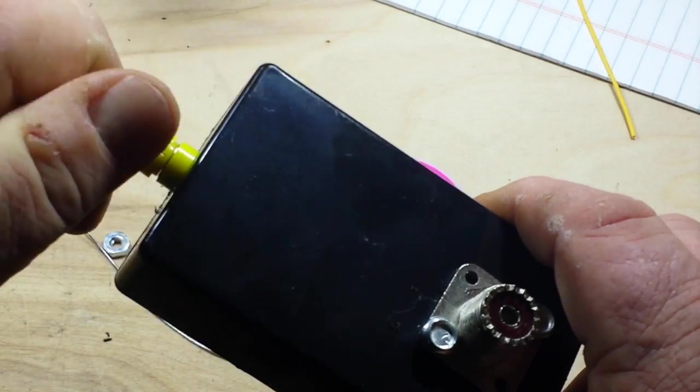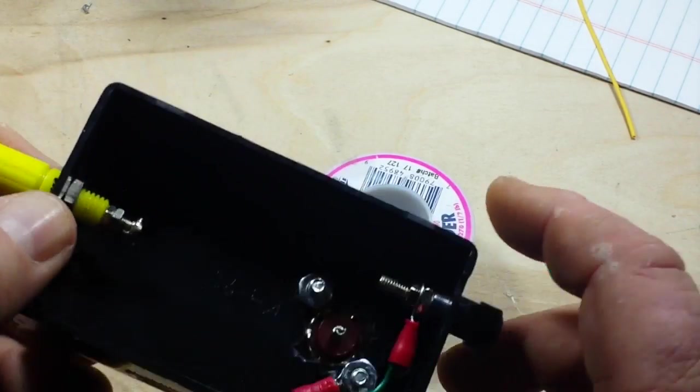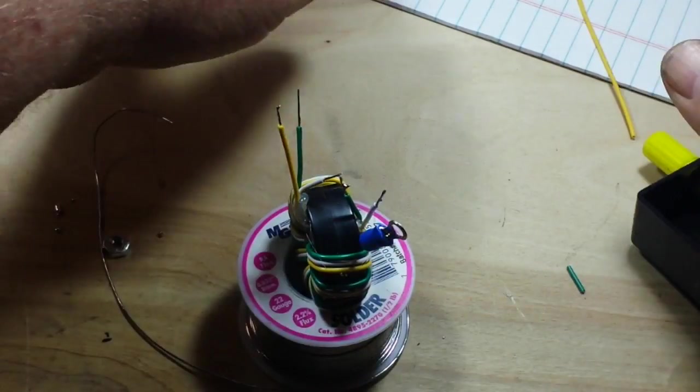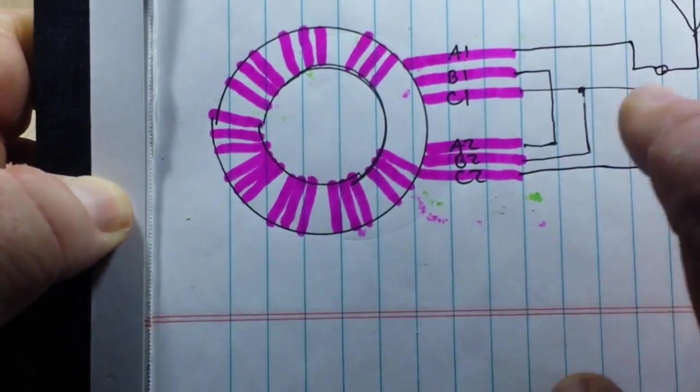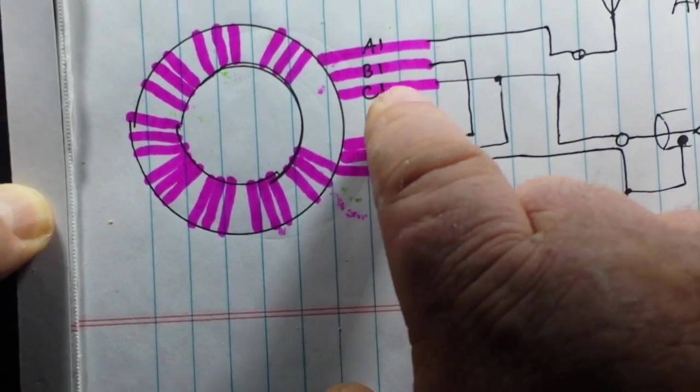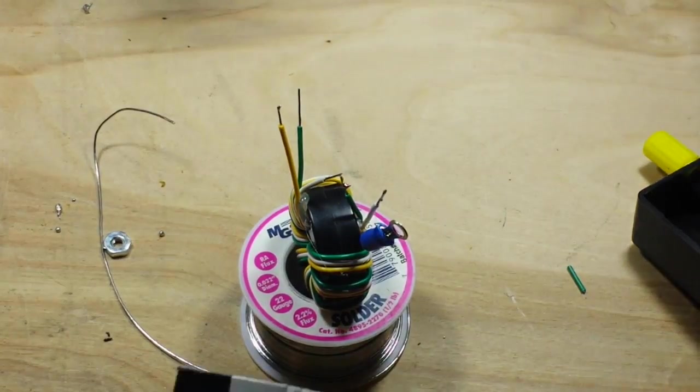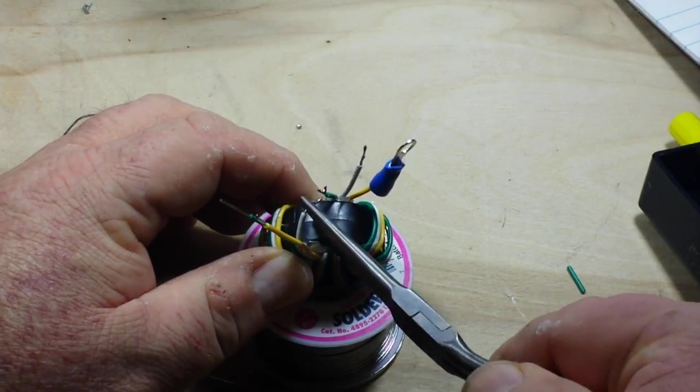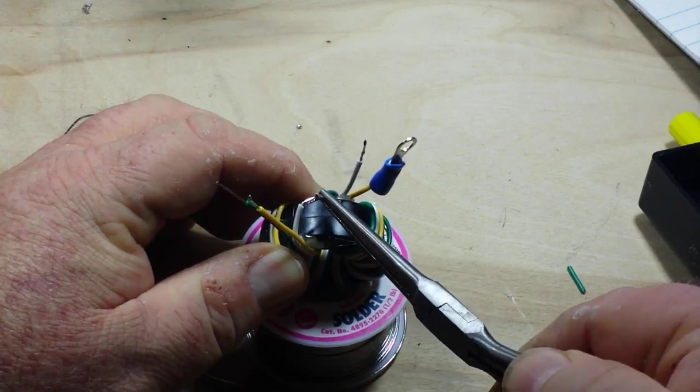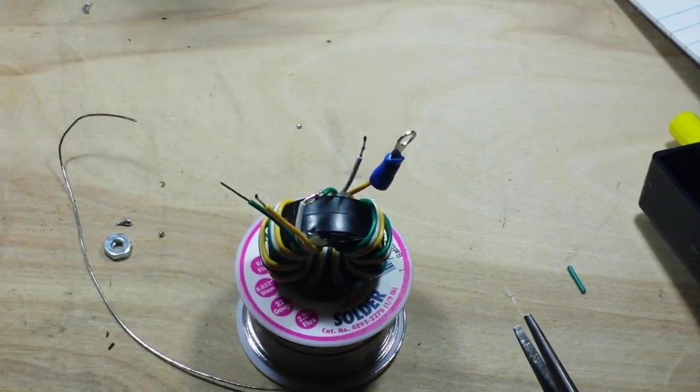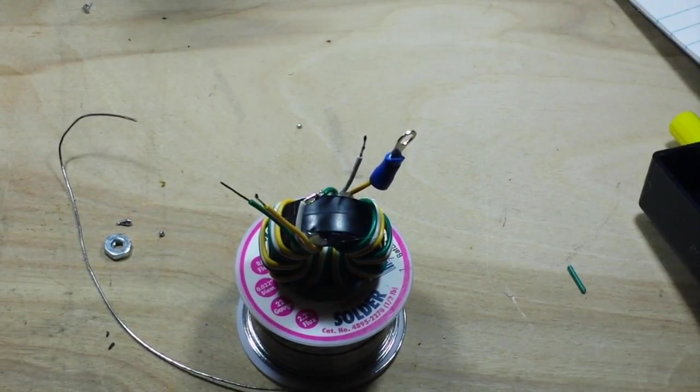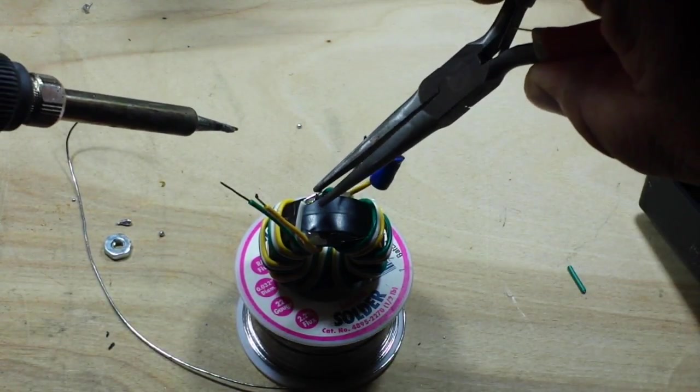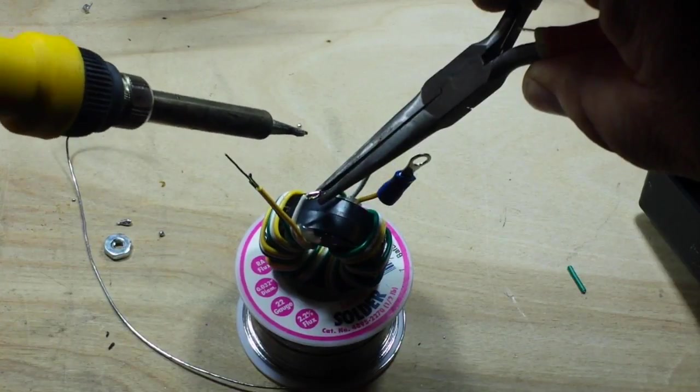So where shall we start? Well, let's start by putting together B1 and A2. So they've already been tinned, and all I really need to do is heat them up and put them together.